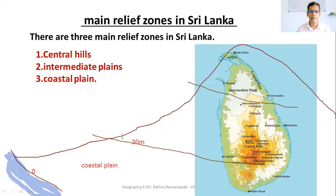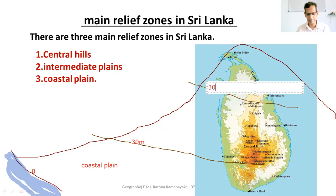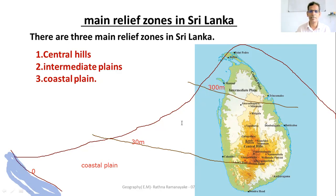The land area between the 30 metre contour line and 300 metres belongs to the Intermediate Plain.